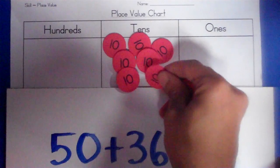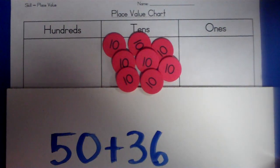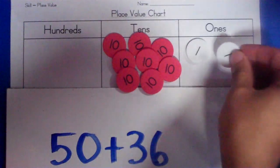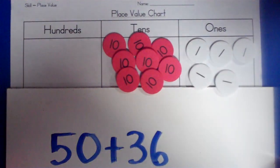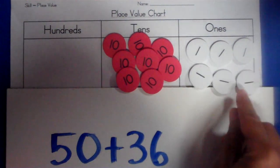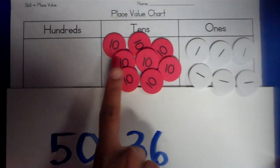1, 2, 3 tens, and 6 ones. 1, 2, 3, 4, 5, 6. 6 what? 6 ones. Alright. Now, what do I have all together?